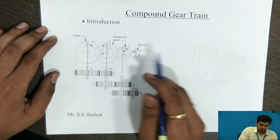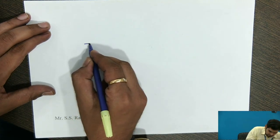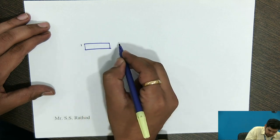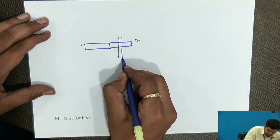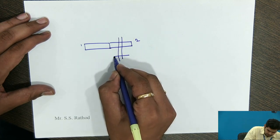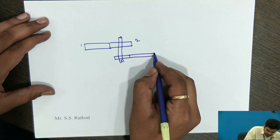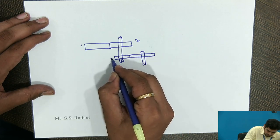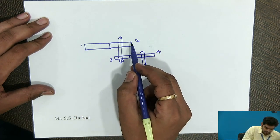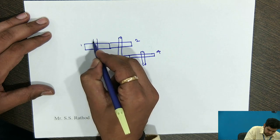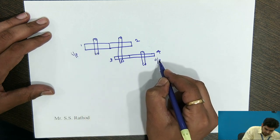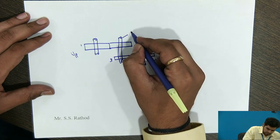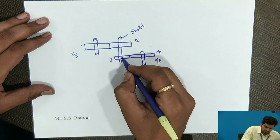Suppose gear number one is connected to gear number two. On the shaft of gear number two, another gear is mounted — gear number three — which is connected to gear number four. So gear number one meshes with gear number two, and gear number three is connected to gear number four. Gear number one is on the input shaft and gear number four is on the output shaft. On the intermediate shaft, two gears are mounted — making this a compound gear train.